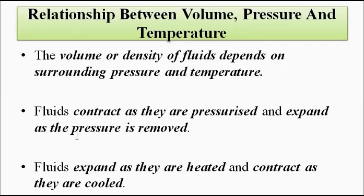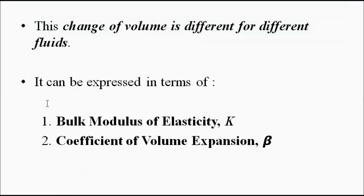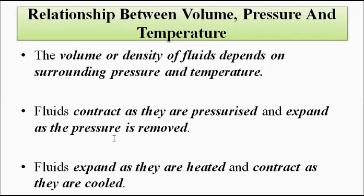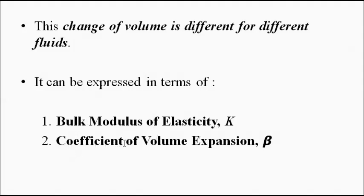We will try to understand these two relationships — the relationship of volume with pressure and volume with temperature — with the help of two principles. The change of volume is different for different fluids, as different fluids have different properties and exhibit different changes of volume with respect to pressure and temperature. There are two such parameters: the first one is bulk modulus of elasticity, related with pressure, and the second one is the coefficient of volume expansion, related with temperature.